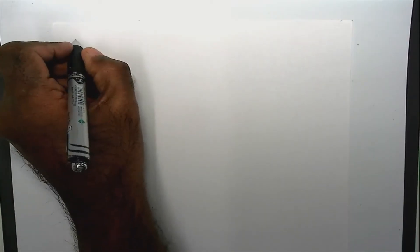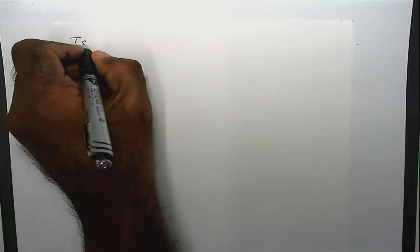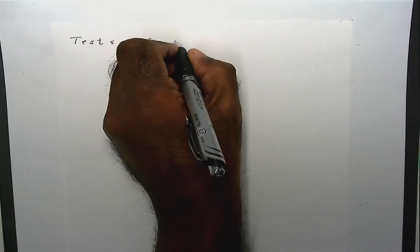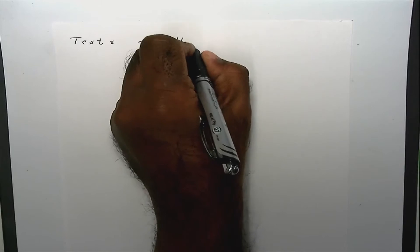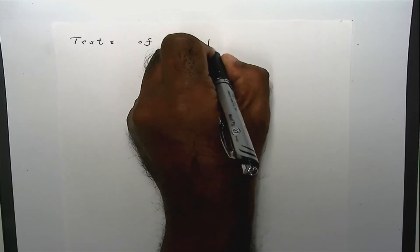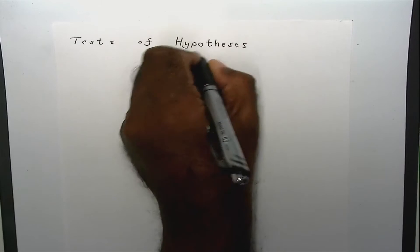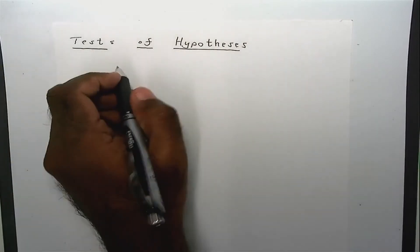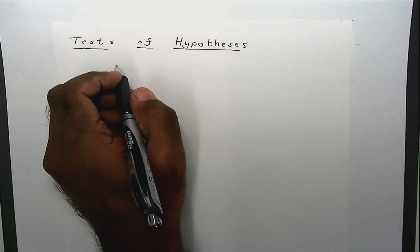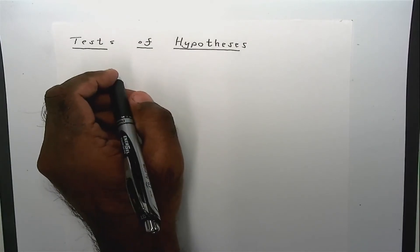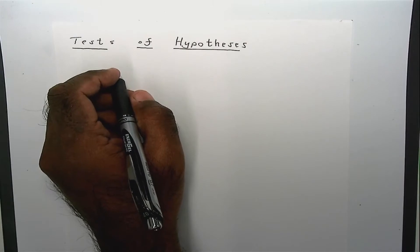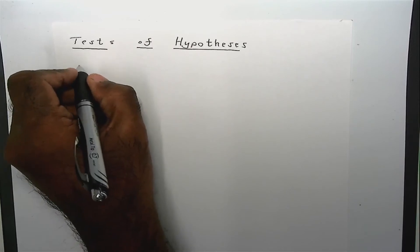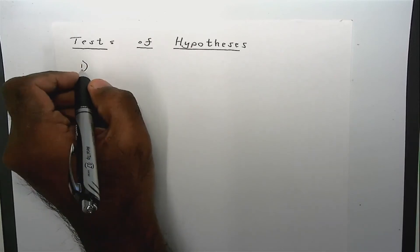In this video I will talk about tests of hypothesis. Tests of hypothesis arise in real life whenever you do an investigation of some kind. Usually there are six elements to a test of hypothesis.